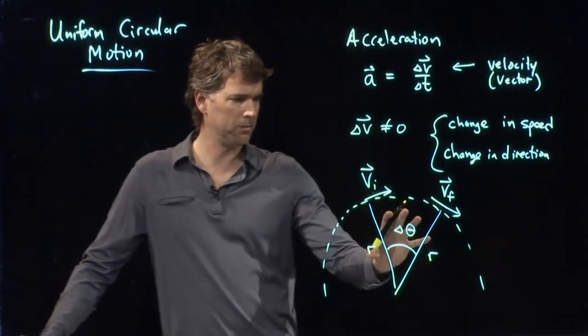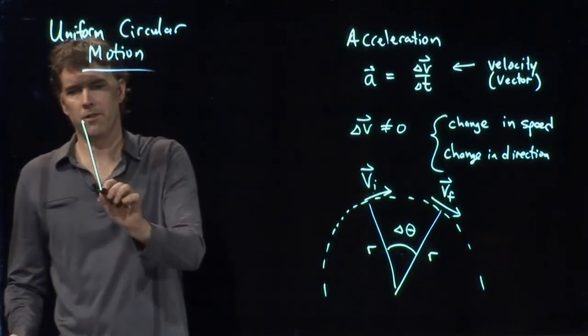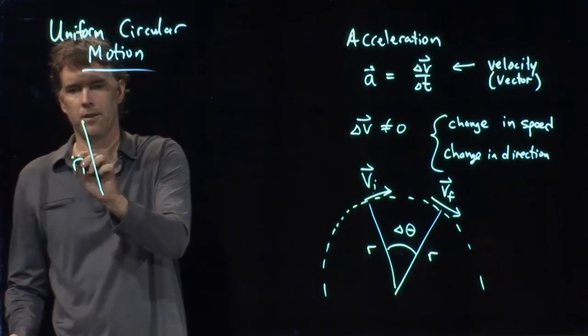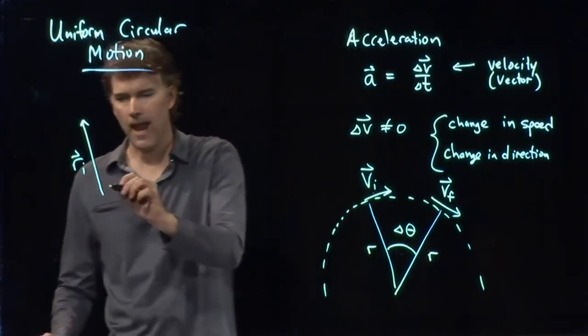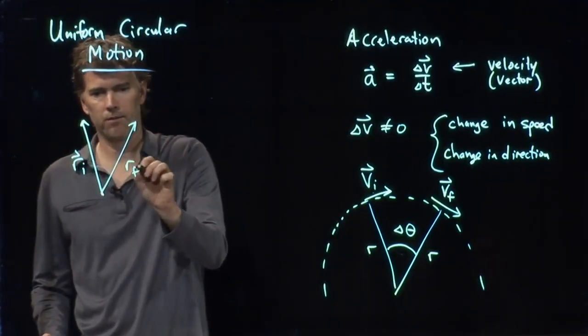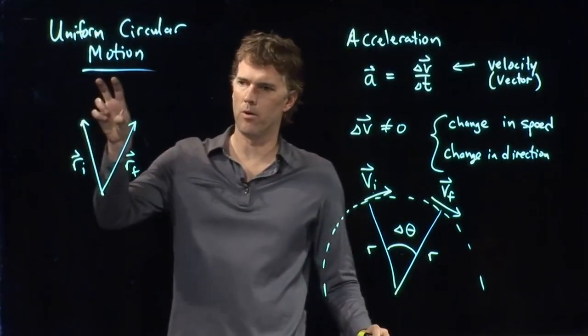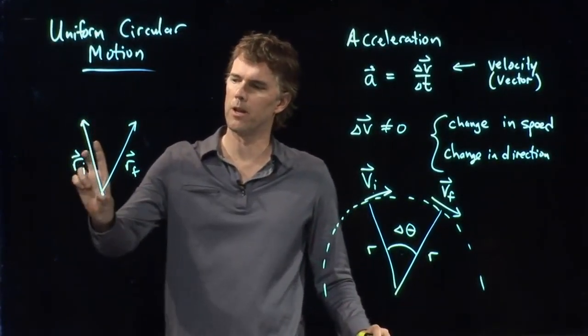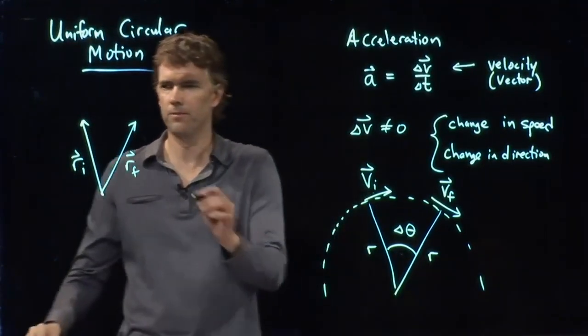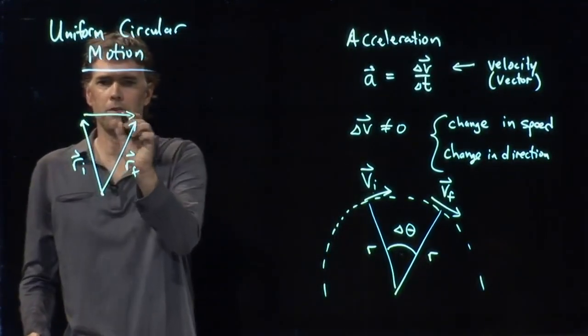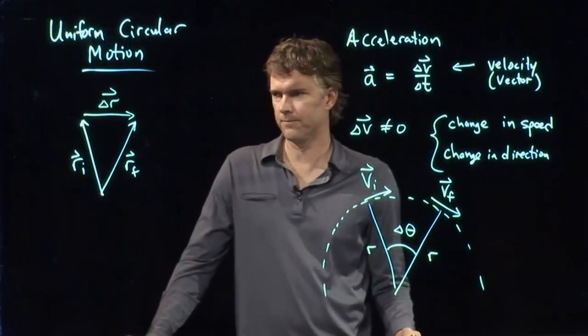So let's take a look at this picture in a little more detail. Where did I start? I started at a position there, r initial. I ended at a position there, r final. Vectors for position, they always define relative to some origin. We'll make the origin the center of the circle. The difference between those two is, of course, right there.